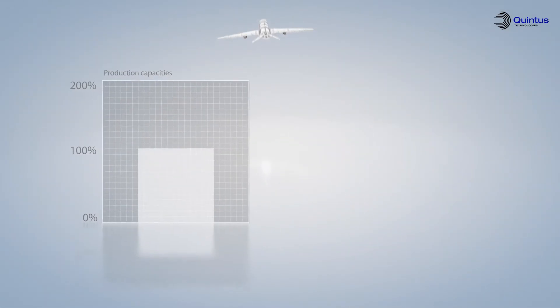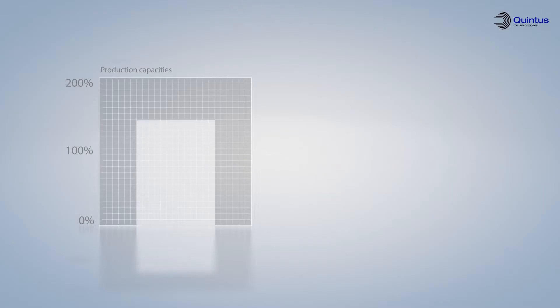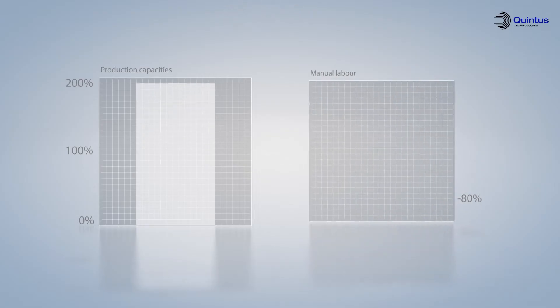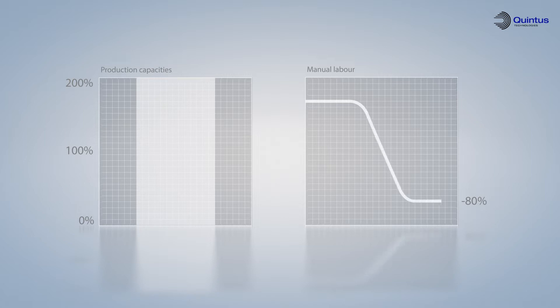The FlexForm technology can double production capacities and at the same time reduce the need for manual labor by up to 80%.